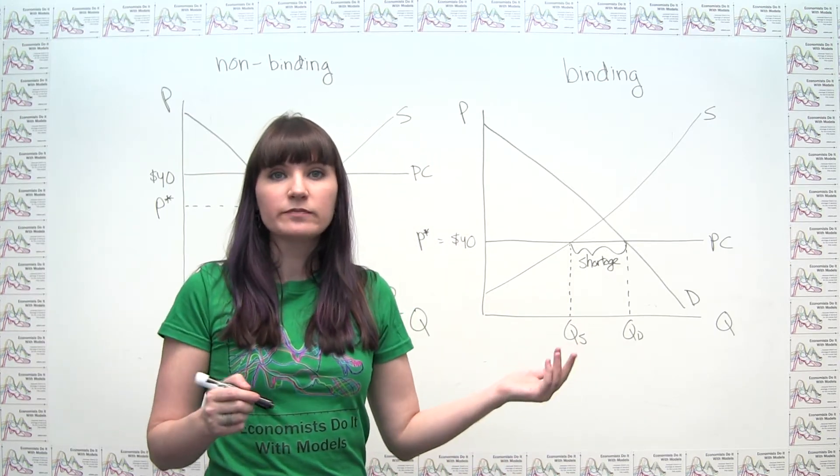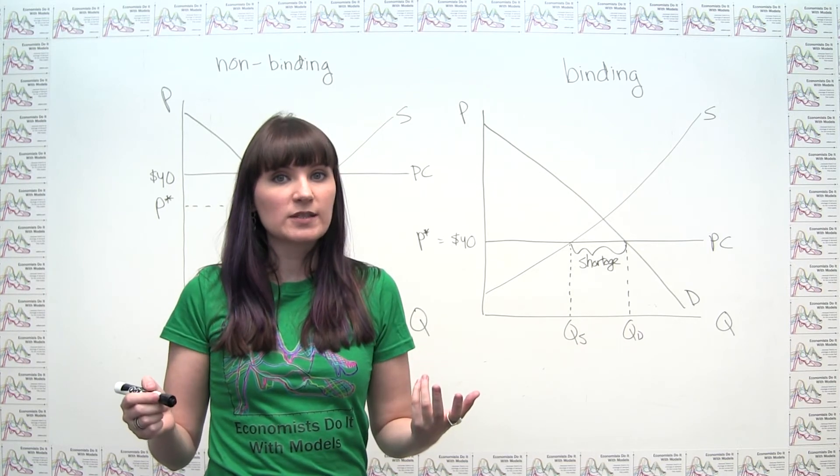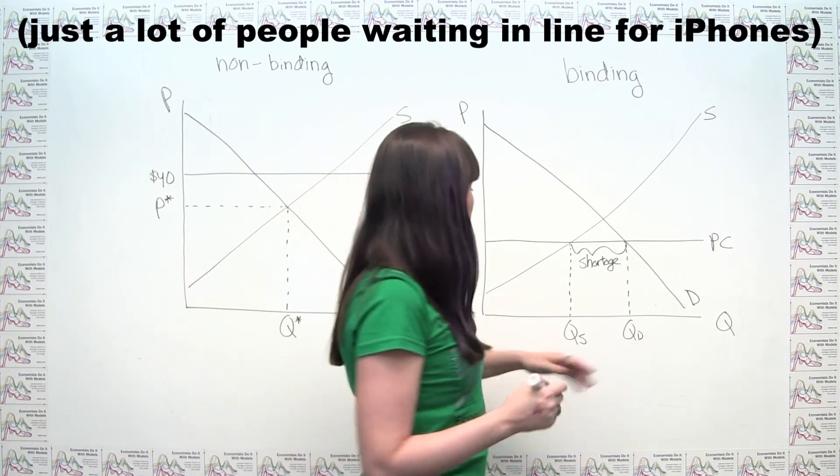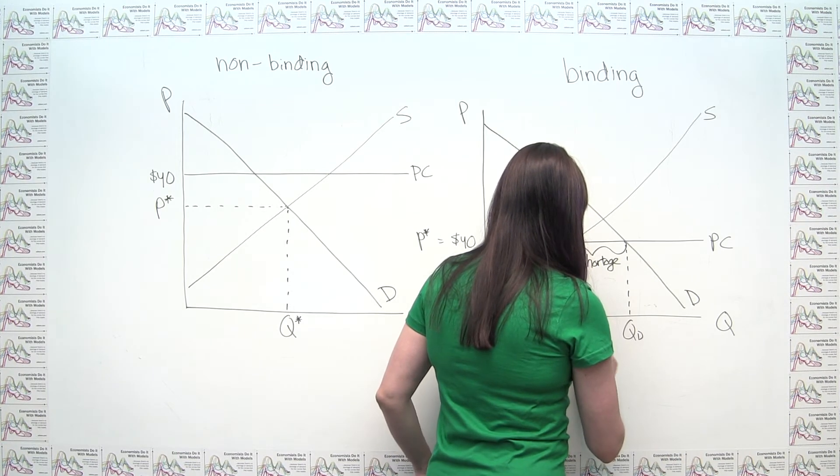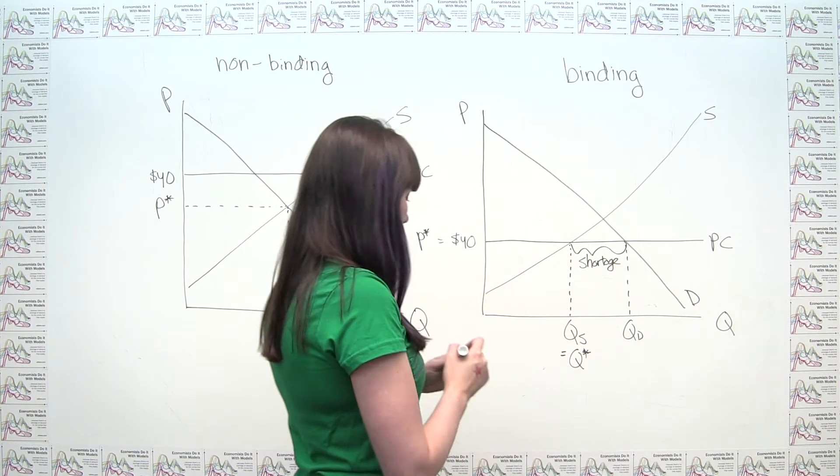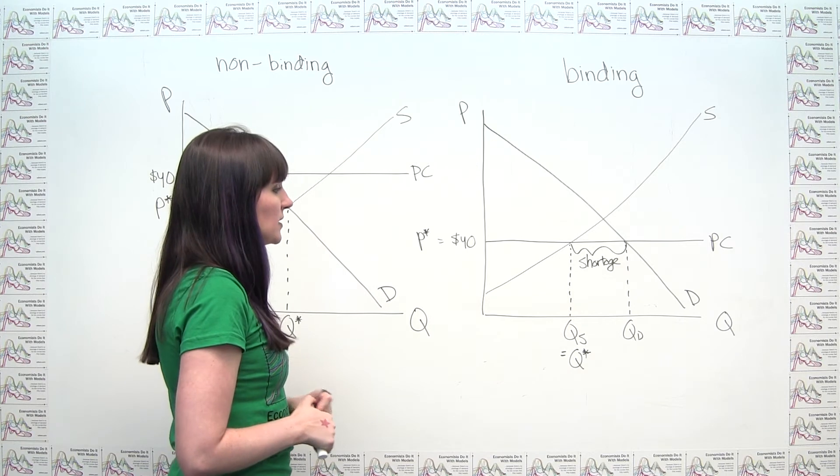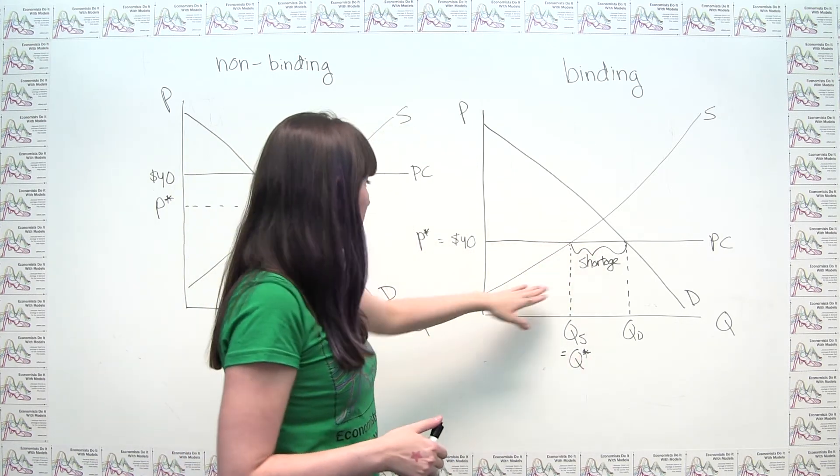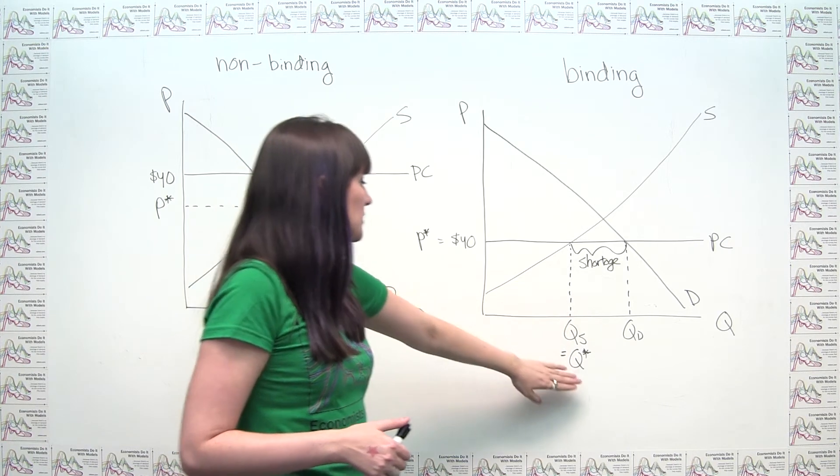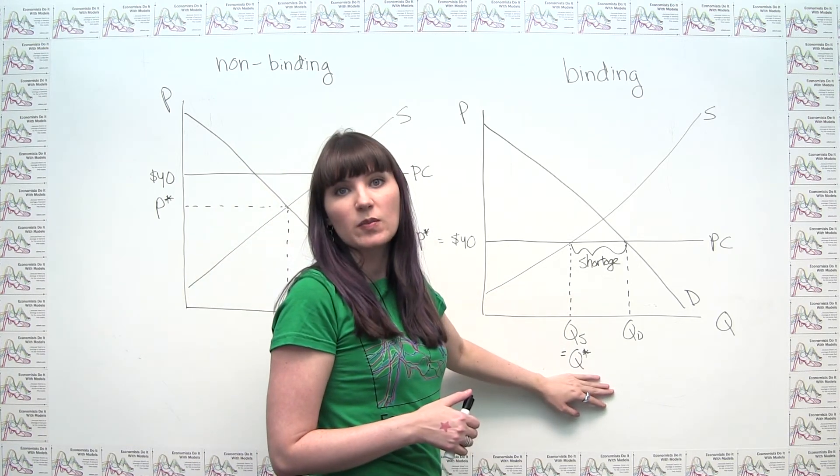If we have buyers but no sellers, hey, guess what? There aren't going to be any transactions happening. So our equilibrium quantity in this market, we could think of that as this quantity here, that supply is the limiting factor when we have a binding price ceiling. And we could see that this is actually the number of tickets that's going to be bought and sold.